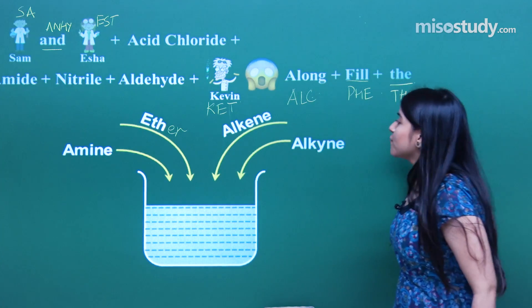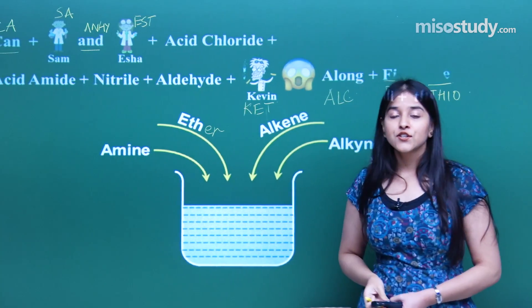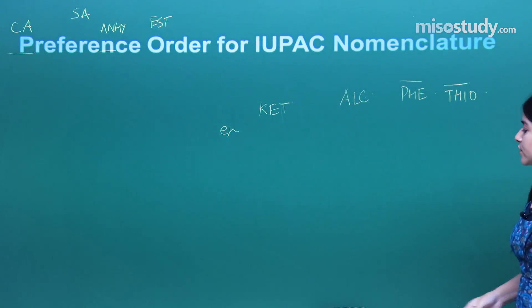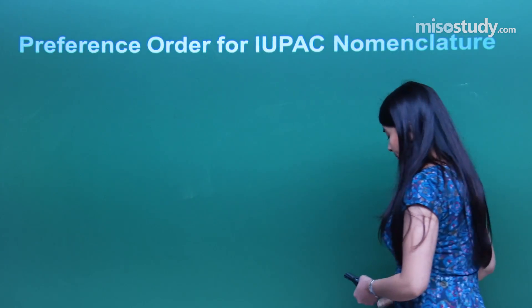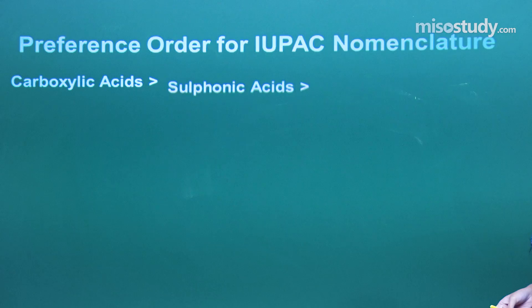So here's the preference order of IUPAC nomenclature: carboxylic acids, followed by sulfonic acids, esters, acid chloride, acid amide, nitrile, aldehyde, ketones, alcohols...